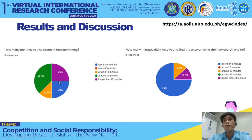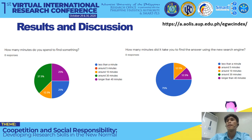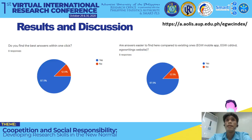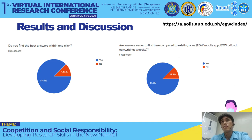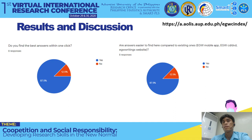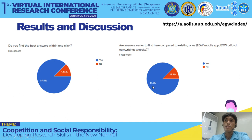Regarding results: before using this system, only 25% of users said it took them less than a minute to find good answers. After using the new search engine, about 75% said they can get an answer in less than a minute — a 50% increase. 87% said they found answers with one click. I only received eight survey responses — it was during the pandemic and I sent the questionnaire to about 50 people and five Facebook groups. In UI evaluation, you only need 5 to 15 users, so eight is acceptable. 87% said the system is easier to use than existing ones.